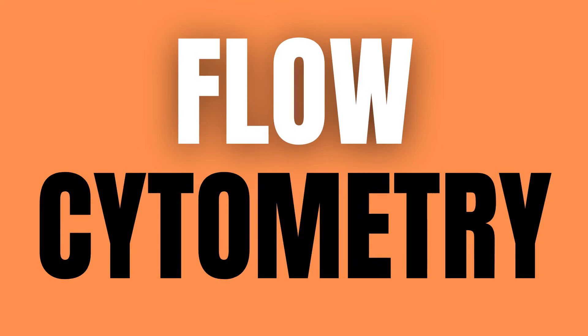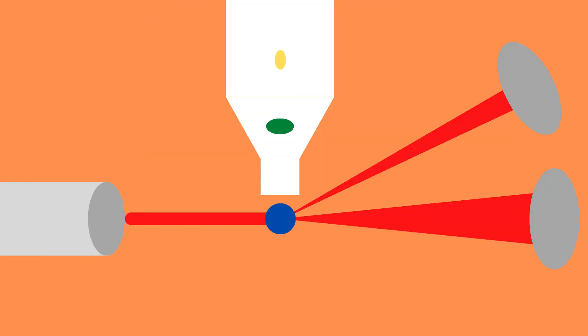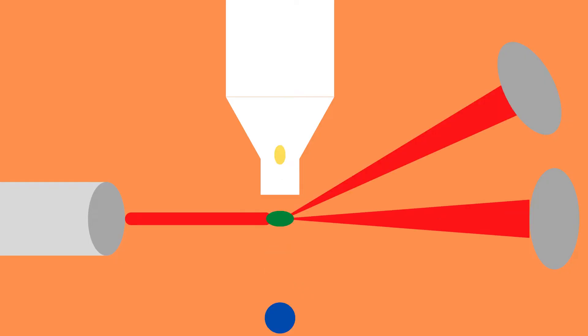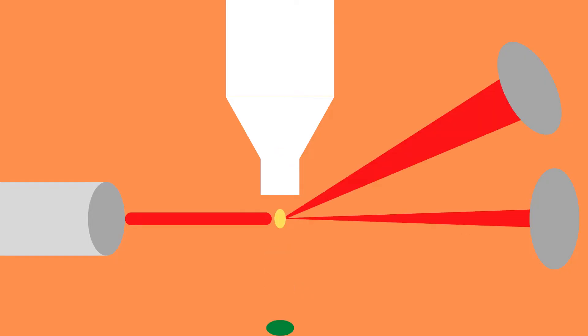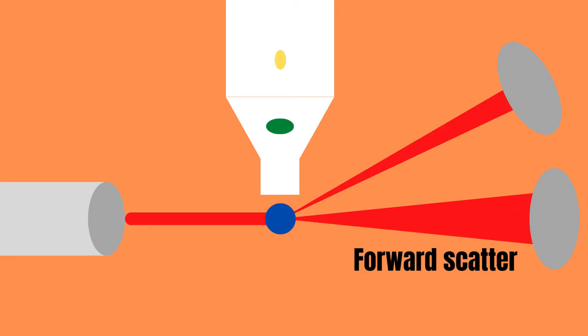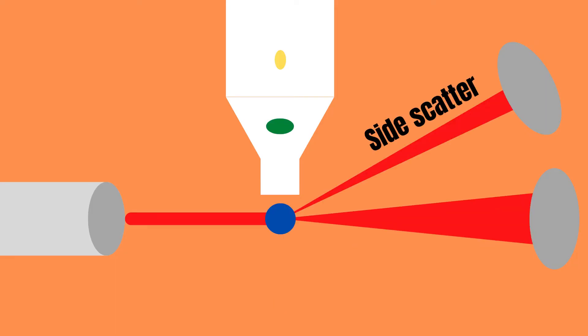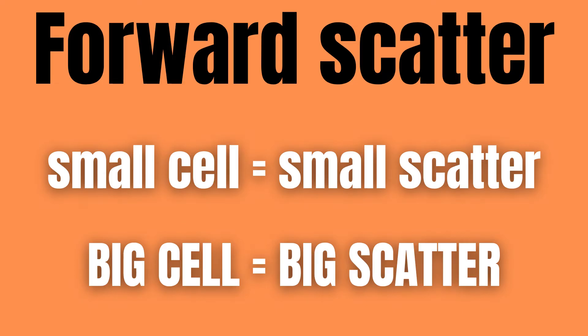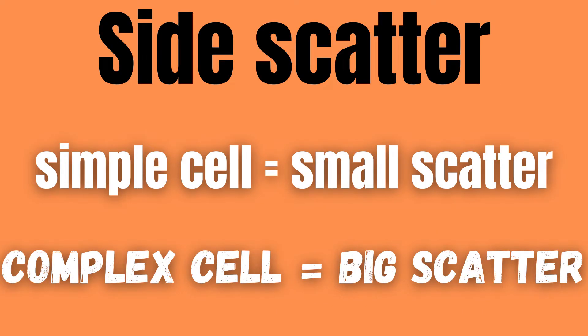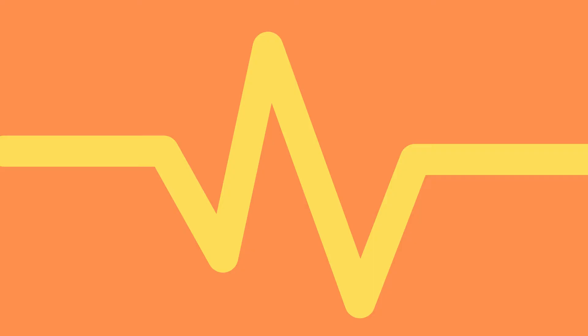Flow cytometry uses light scattering caused by cells in a sample which are passed through a laser beam. This light scatters in the forward direction as well as the side direction, called forward scatter and side scatter respectively. Forward scatter is proportional to the size of the cell while side scatter is proportional to the complexity of the cell. Both signals get detected and converted into an electric pulse which is directly proportional to the amount of scattered light.